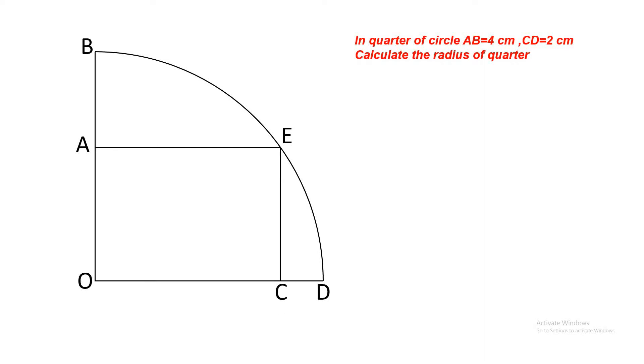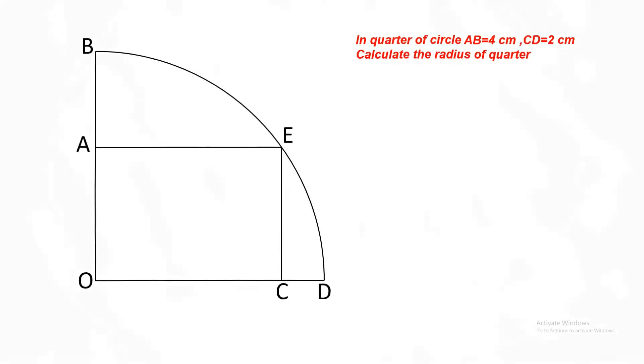The question is: in a quarter of a circle, AB equals 4 cm, CD equals 2 cm. Calculate the radius of the quarter. Let's begin. Here is our diagram with AB equal to 4.